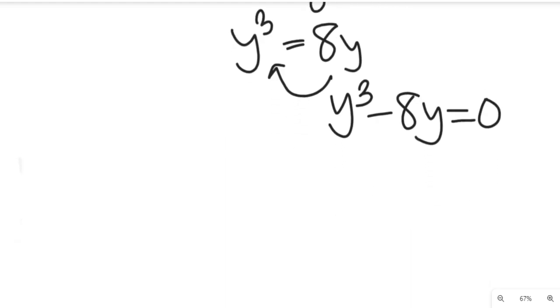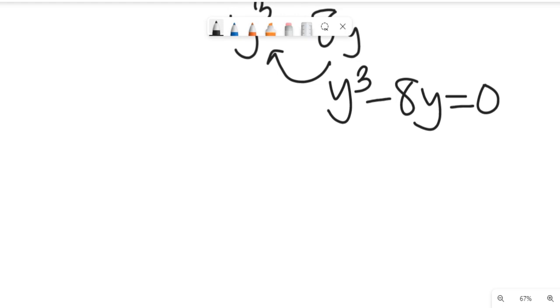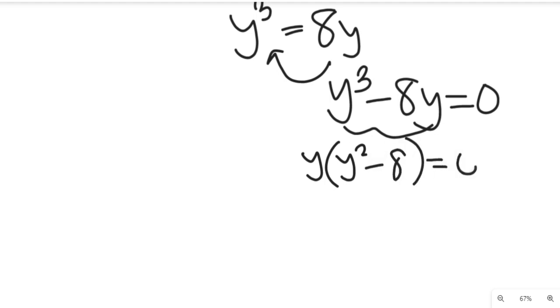Now this is more of a quadratic equation, or we say it's a polynomial equation. In these two terms, something is common, y is common, so we'll factor out y, and this will be y times y² minus 8, all equal to 0.